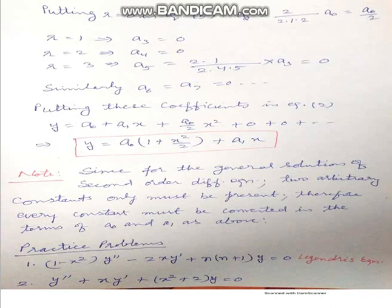We now substitute all coefficient values into equation 2 (the assumed solution). We get: y = a0 + a1·x + (a0/2)·x², and all further terms are zero. Therefore, the final general solution is: y = a0(1 + x²/2) + a1·x. This is the required general solution. Note: since this is a second order ODE, the general solution contains exactly two arbitrary constants, a0 and a1. Finally, two practice problems are given, the first of which is Legendre's equation.